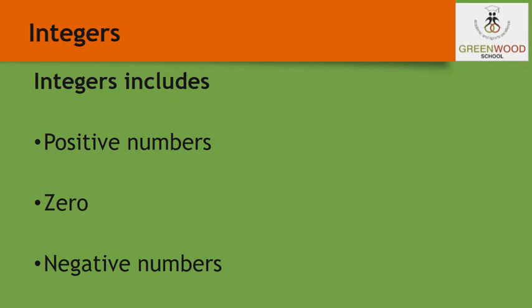Integers include positive numbers, 0, and negative numbers. We can say that integers are the numbers which include all the whole numbers and all the negative numbers.